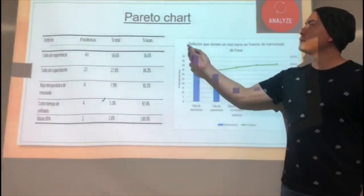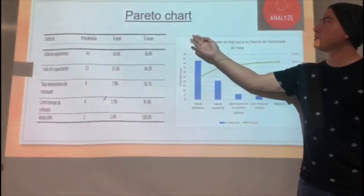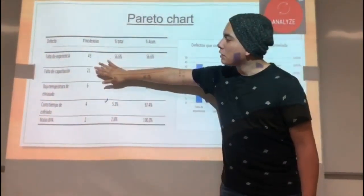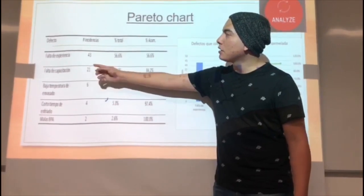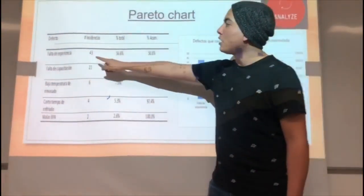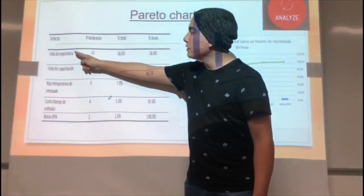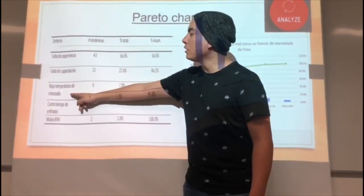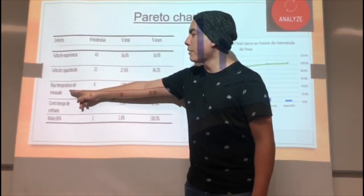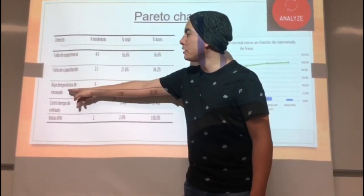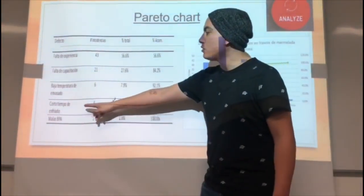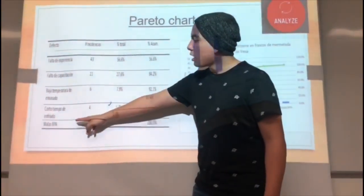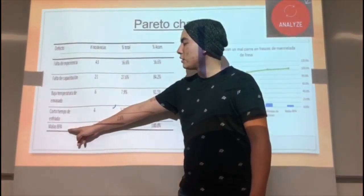Now I am going to explain the Pareto chart. We have five defects: inexperience, lag training, low packaging, low packing temperature — not enough temperature, not enough curing time — and incorrect GMP.